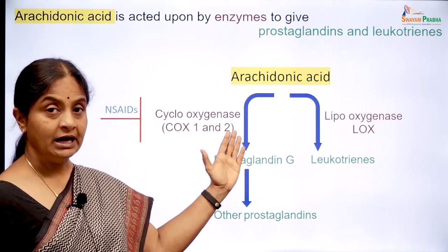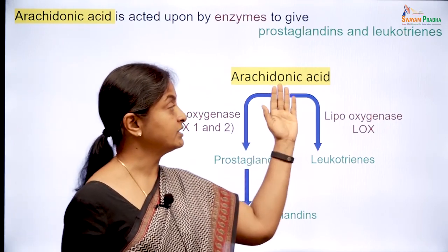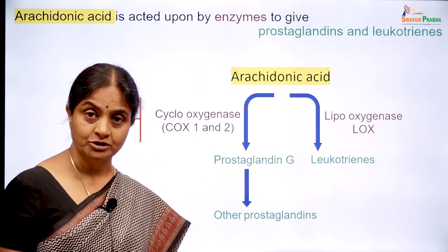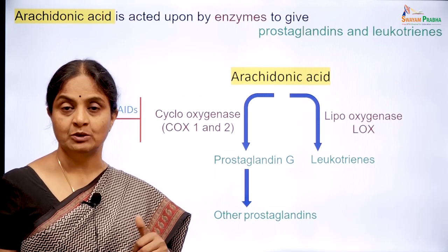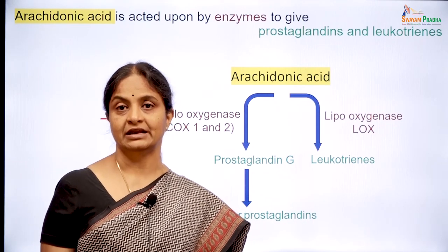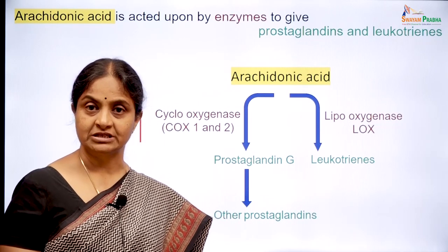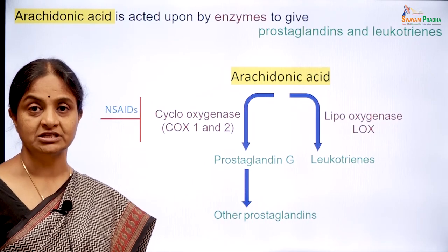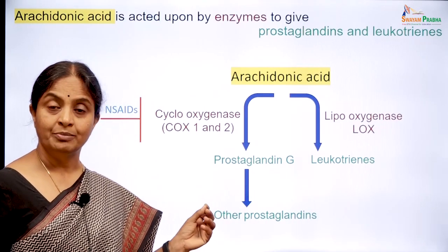Arachidonic acid can be acted upon by the cyclooxygenase enzyme to form prostaglandin G, which goes on to form other known prostaglandins, or it can be acted upon by lipoxygenase to form leukotrienes. Prostaglandins have many important roles in the body: they are important for forming the mucus coat of the gastric mucosa which protects it from stomach acid, they are important in establishing labor at the end of pregnancy, they also mediate inflammation — redness, swelling, recruiting white cells to the region of injury — and they are important for platelet aggregation as well. These inflammatory processes are also mediated by leukotrienes.